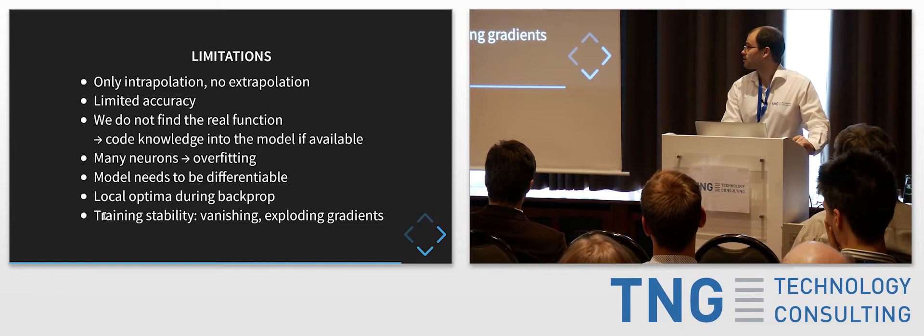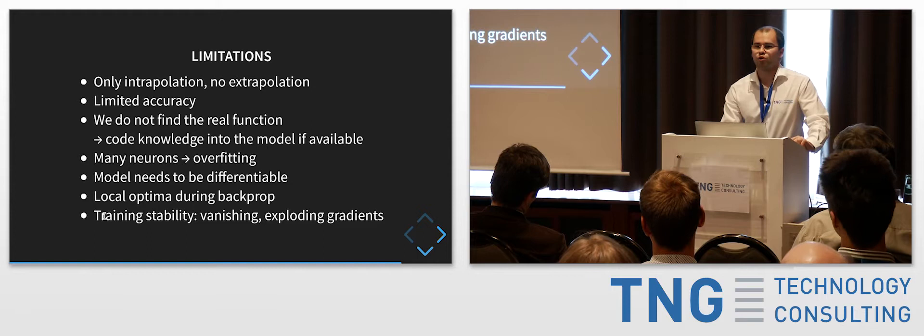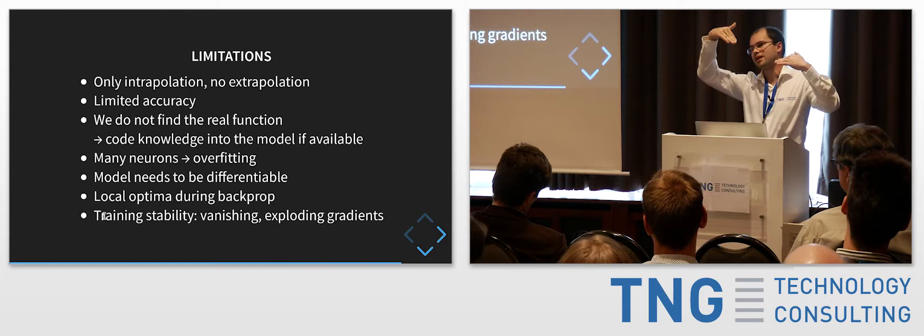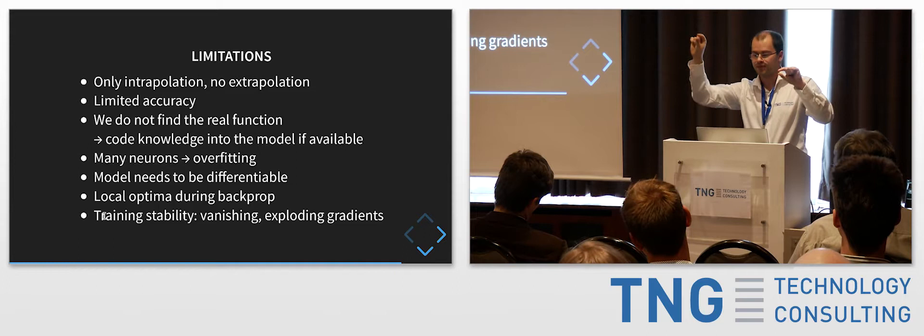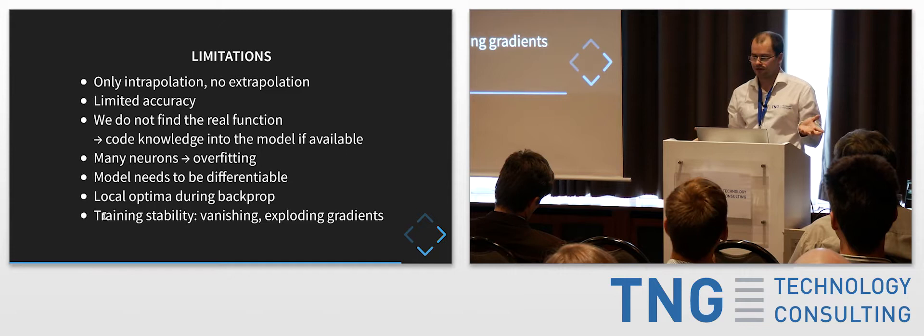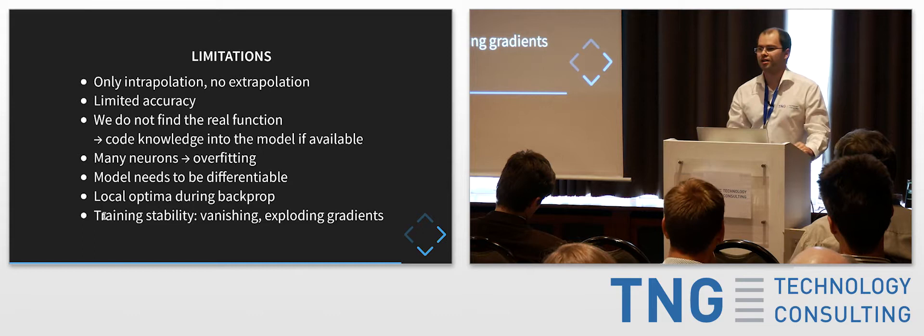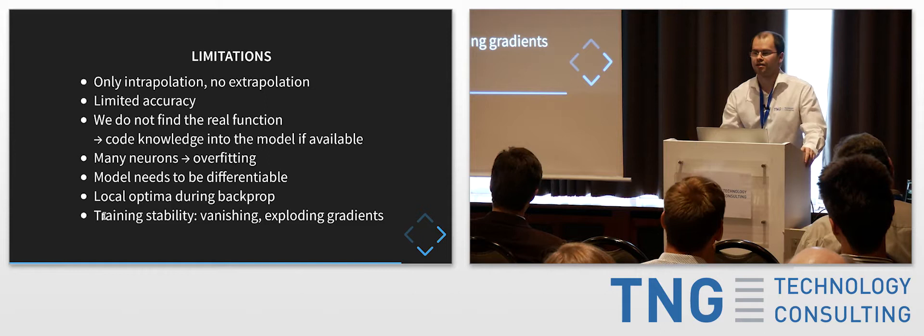Training stability is not easily achieved. There are problems like vanishing gradients: the sigmoid function at its ends has near-zero slope — its derivative is near zero. When doing backpropagation through functions within functions, you multiply these values together, and small values get smaller until the gradient vanishes.